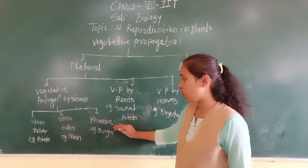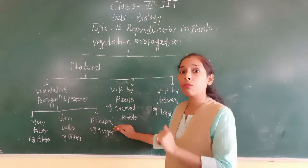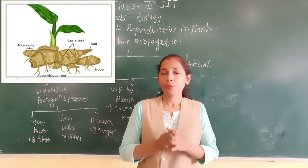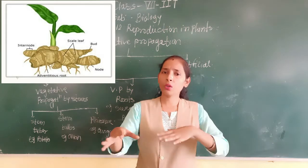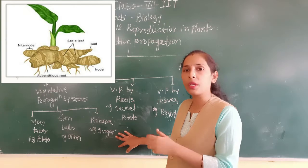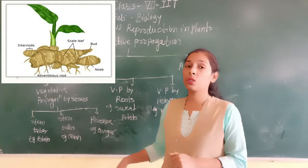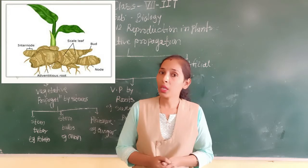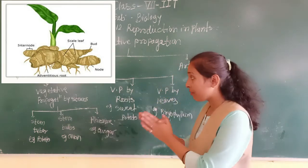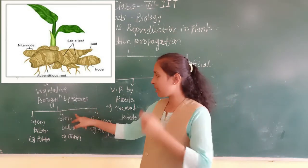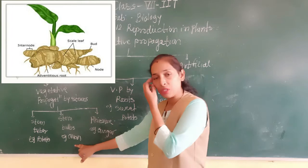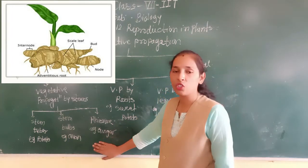Next we discuss the rhizome. Rhizome is nothing but an underground stem — for example, ginger and turmeric. Why are they called rhizomes? Because they grow horizontally underground in any direction. This rhizome also contains buds and scaly leaves on it, and from each bud we can grow a new plant.